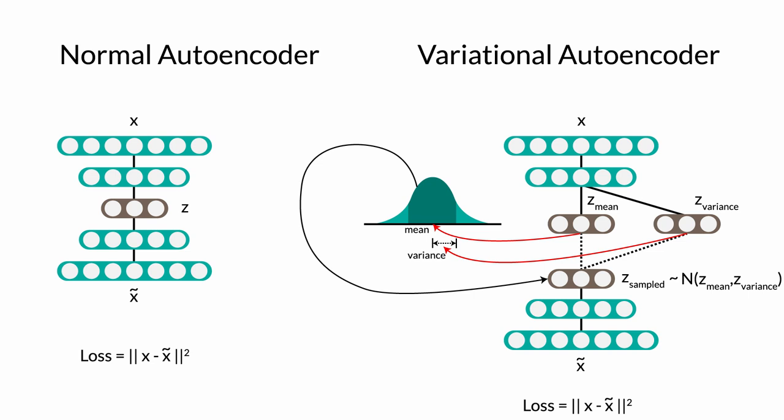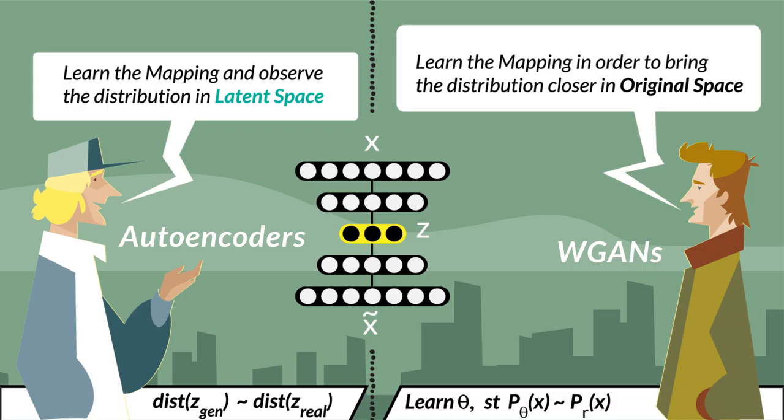But anyways, for WGANs, we are more interested in tweaking the generator, which means we gotta learn the mapping. Now unlike variational autoencoders, WGANs use a different trick to do so. Instead of latent space, it focuses on parameters such that the smooth changes in parameters lead to smooth changes in output distribution.